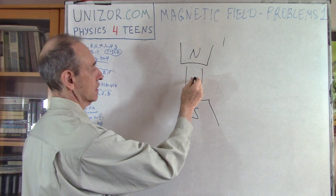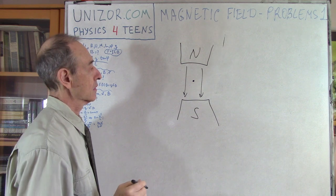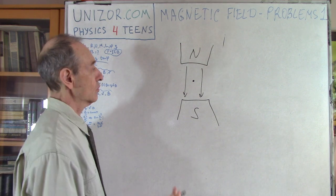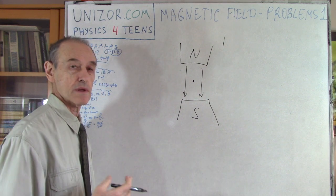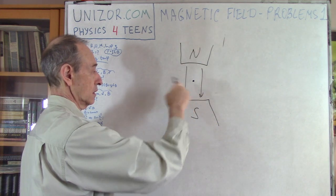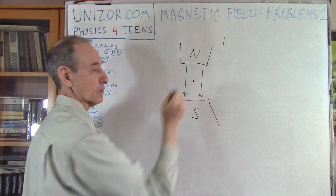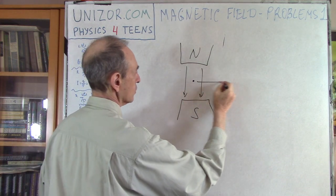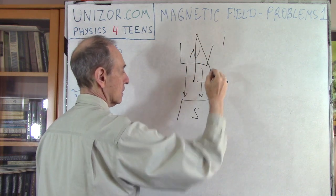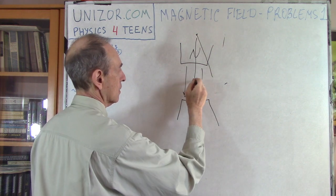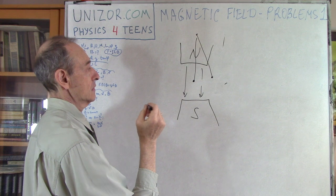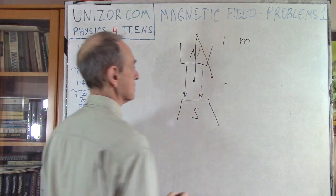So what happens if there is an electric current going through this particular wire? Well, we have the Lorentz force, and it forces the whole wire to move perpendicularly to both the direction of the magnetic force and the direction of the current. Let's assume it goes this way. But since it's hanging on threads, it will take a displaced position. The wire has certain mass, so there is gravity.